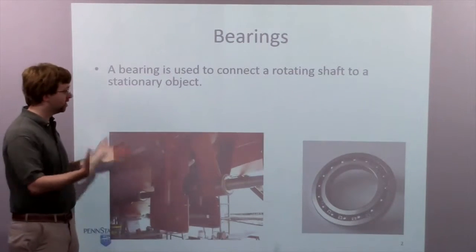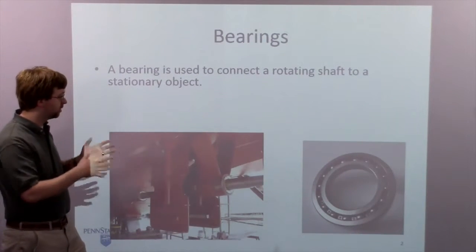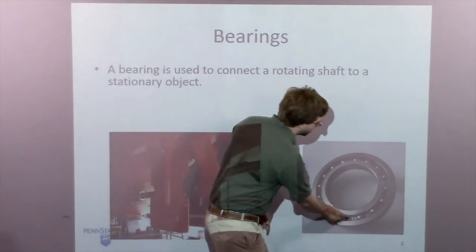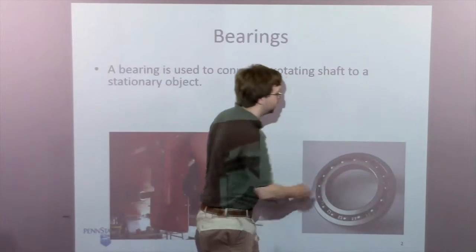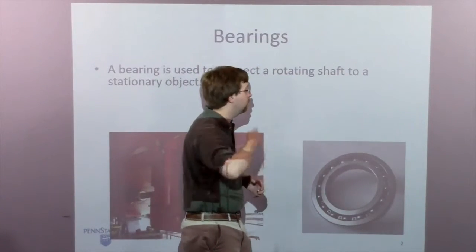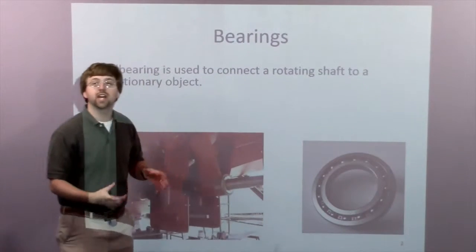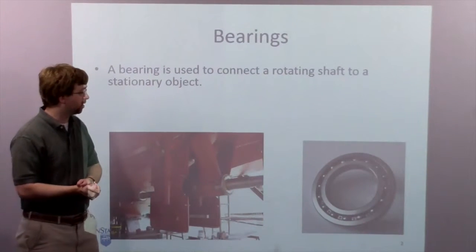Another example of a bearing that is separated from the rest of the bodies - here we've got a roller bearing. This inside part right here would be connected to the rotating shaft and would move with the shaft. The outside part here would be stationary and be anchored to some other part of the body.